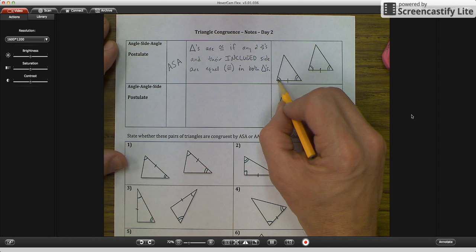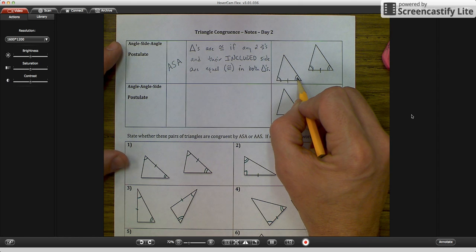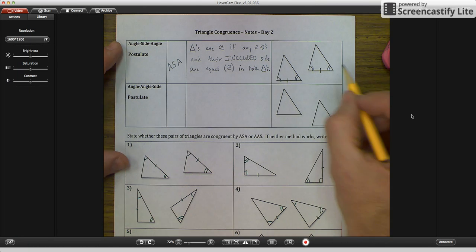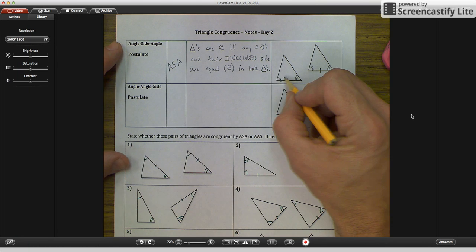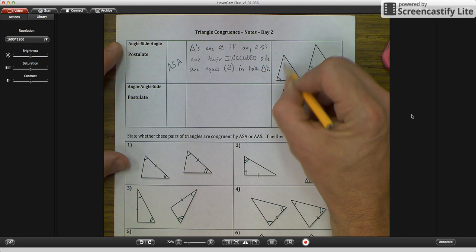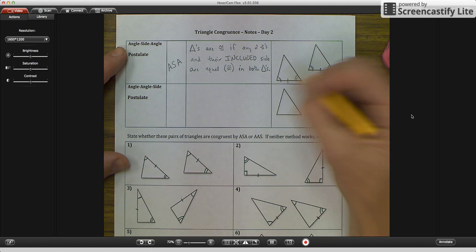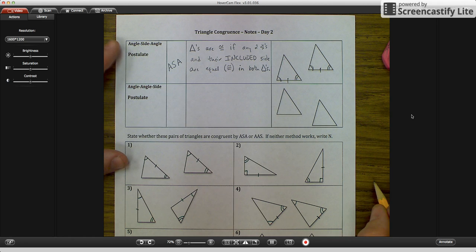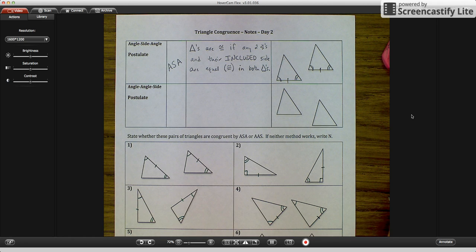Therefore, this would be angle, side, angle postulate because they're in the same order. Okay, if we picked a different angle, if we had this angle up top and this angle here, it would have to be this side that we're talking about. But since we have these two angles, it has to be the side that connects them. Make sense? I hope it makes sense.